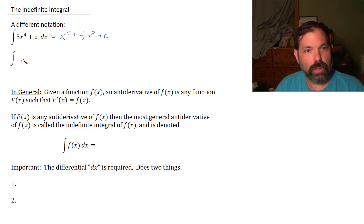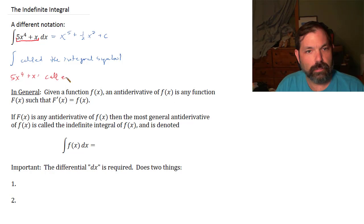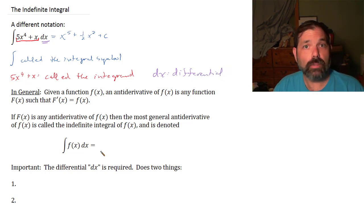Let's go over some notation. That long S-shaped symbol is called the integral symbol. The expression being integrated — in this case 5x to the fourth plus x — is called the integrand. The dx is called the differential. We learned a little about differentials in a previous topic, and we'll learn more about them in this section.